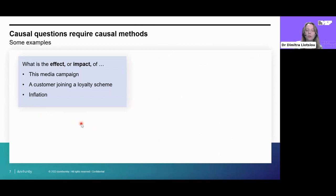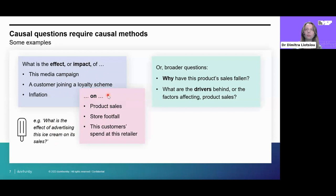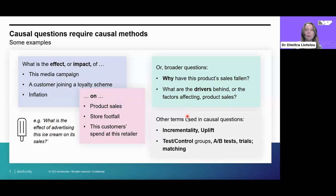What are some common causal questions that require causal methods? Whenever you have a question of the form 'what is the effect or impact of something' — like a media campaign, a customer joining a loyalty scheme, or inflation — on an important outcome like sales or store footfall, or the effect of advertising an ice cream product on its sales, these are causal questions. You might also ask why product sales have fallen, or what are the drivers behind product sales and their relative strength. Terms like incrementality, uplift, test and control groups, A/B tests, trials, and matching all relate to answering causal questions.